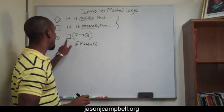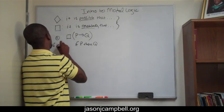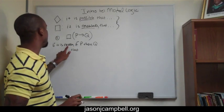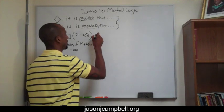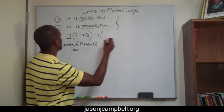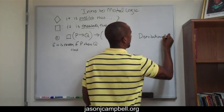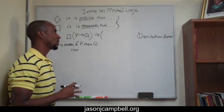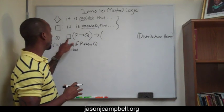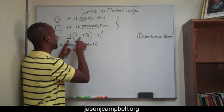So all we have to do now is add this: if it is necessary that if P, then Q. This is known as the distribution axiom - one of the foundational axioms in modal logic. So if it is necessary that if P, then Q, all I do now is distribute this square - I distribute the necessity. So P gets a necessary claim and Q gets a necessary claim.